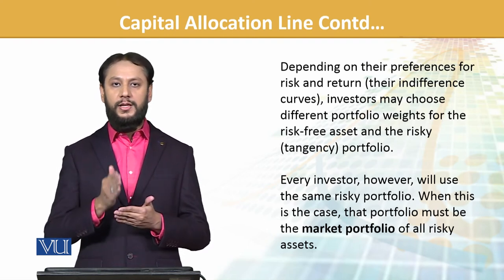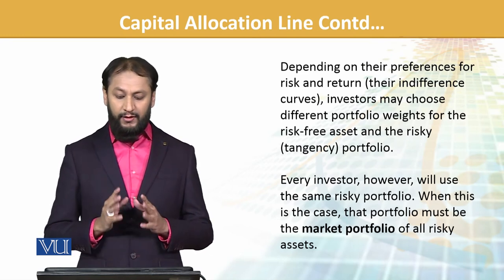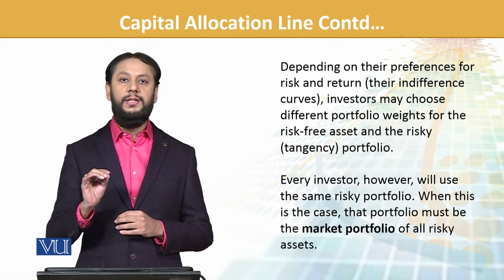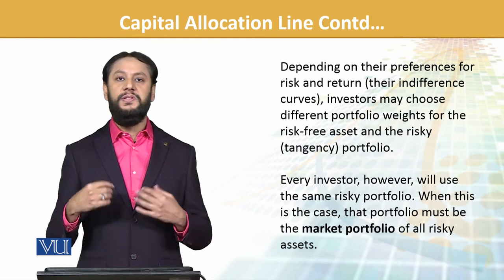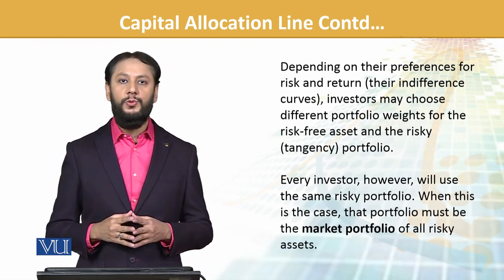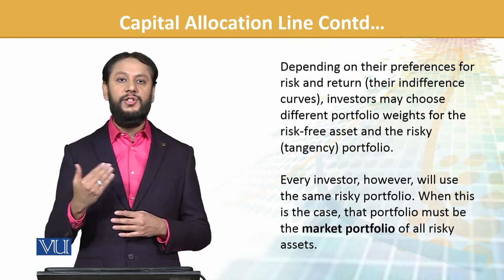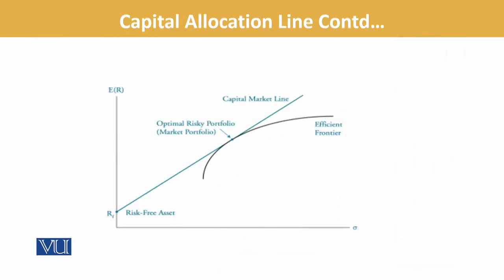Whoever wants less will take less. Whoever wants the market return will take it at that point. Some can even take more than that. Everyone uses the same risky portfolio — someone may put 50% weight in it, someone only 30%, someone may put 80%. The weights change, but the risk portfolio remains the same. This is the market portfolio point. When we have this situation, the CAL becomes one line, and its optimal portfolio is the tangent of the efficient frontier.